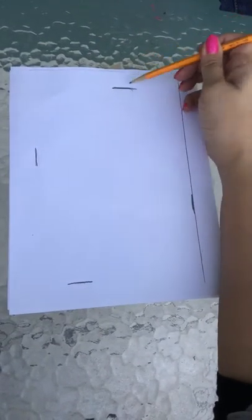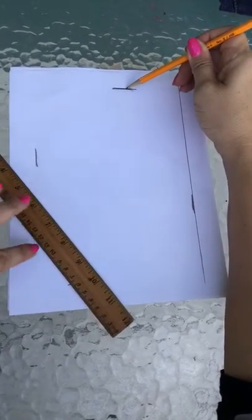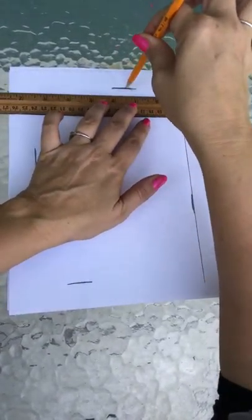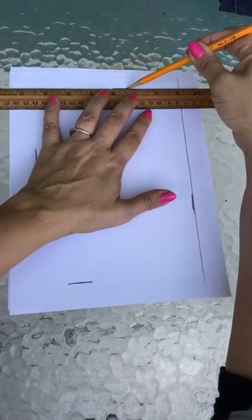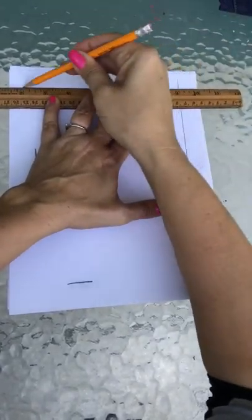Put your pencil on the top mark and gently slide your ruler just to touch it, and then make the line.